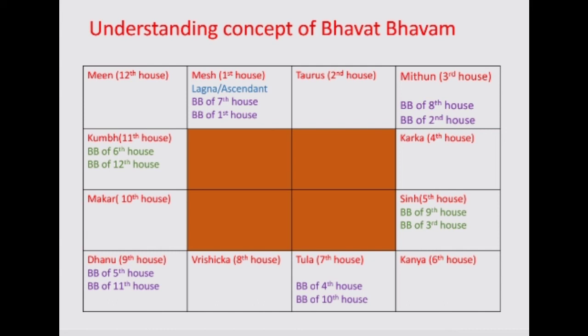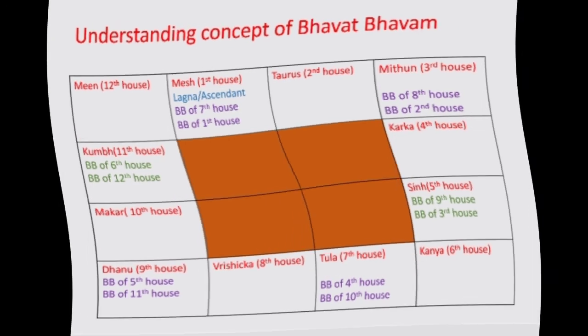What is the Bhavat Bhavam of the 7th house? The 7th house is your life partner. Count 7 from the 7th house: 7, 8, 9, 10, 11, 12, 1. The 1st house is the Bhavat Bhavam of the 7th house. What does this mean? It is your life partner who makes you complete. Your life attains a true meaning once you get a proper partner, and therefore the Bhavat Bhavam of the 7th house is the 1st house.